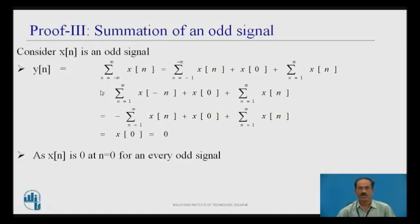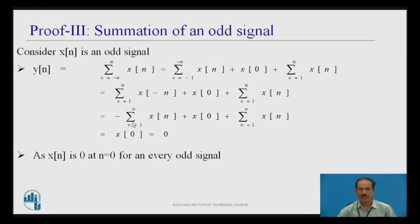Summation of an odd signal: Consider x(n) is an odd signal. y(n) = Σ from -∞ to ∞ of x(n). Splitting the limits: Σ from 1 to ∞ of x(-n) + x(0) + Σ from 1 to ∞ of x(n). Since x(n) is odd, x(-n) = -x(n), so this becomes -Σ from 1 to ∞ of x(n) + x(0) + Σ from 1 to ∞ of x(n). The two summation terms cancel, leaving only x(0), which equals 0 since x(n) = 0 at n = 0 for any odd signal.